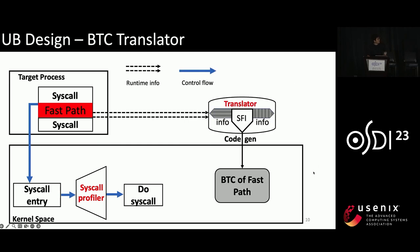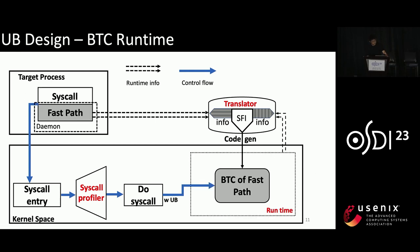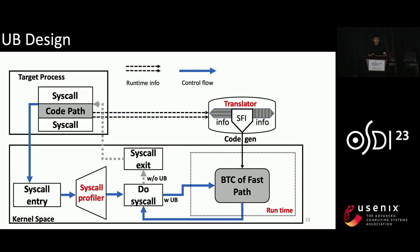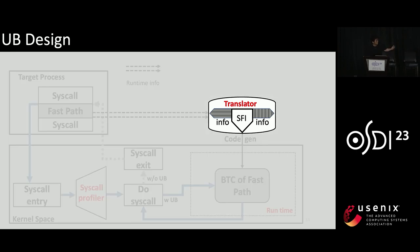Once we have the fast path, the BTC Translator translates it into BTC, and BTC Runtime executes it in kernel space. Ideally, BTC Runtime finishes the fast path and calls the next doSyscall function. In other scenarios — such as when BTC accesses invalid memory or a code path is not fully translated — it falls back to user space. If a syscall is not hot, there is no fast path and UB simply exits kernel to continue a regular run.